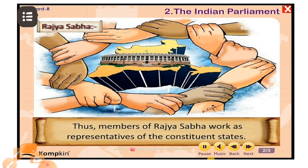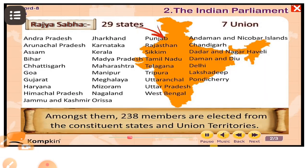The total membership of Rajya Sabha is 250 members. Among them, 238 members are elected from the constituent states and union territories. All the constituent states do not get equal representation in the Rajya Sabha — it is proportionate to the total population of each state.